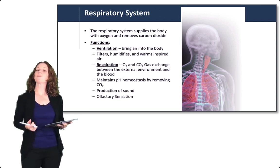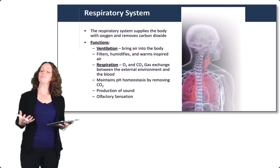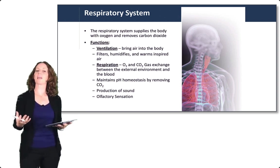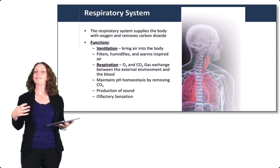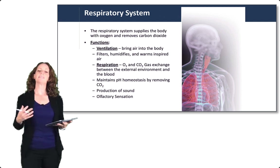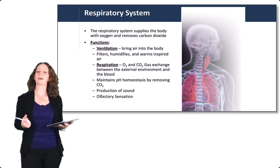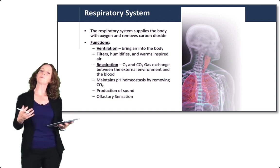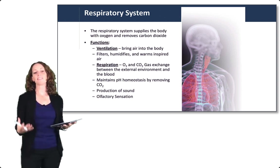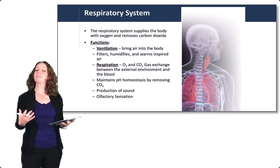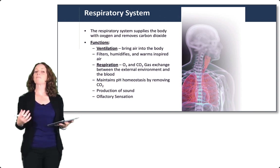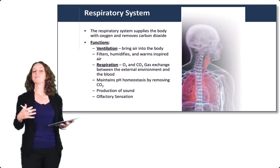The respiratory system supplies the body with oxygen and removes carbon dioxide. To do that, it has to perform ventilation — bringing air into the body — filter, humidify, and warm that inspired air, and then perform gas exchange. Gas exchange is the process of respiration, normally involving oxygen and carbon dioxide, between the external environment and the lungs, and then the blood and the tissues. The respiratory system also maintains pH homeostasis by regulating carbon dioxide.